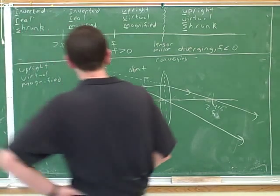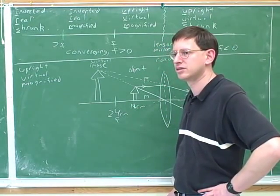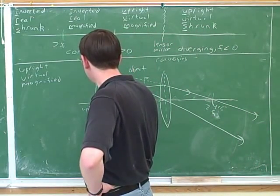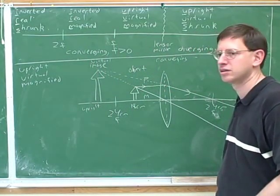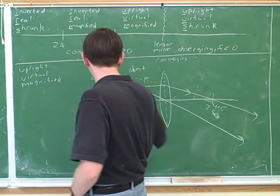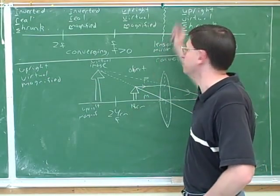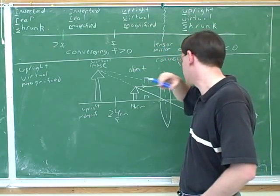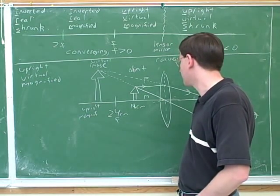Just looking at the picture, does this look like it is upright or inverted? It's upright — because it's the same orientation as the object. And does it look magnified or shrunk? The image is magnified, because this arrow is bigger than this one. And that all matches up to our prediction. So we've proven this part of the chart using ray tracing, and everything is as we had predicted.